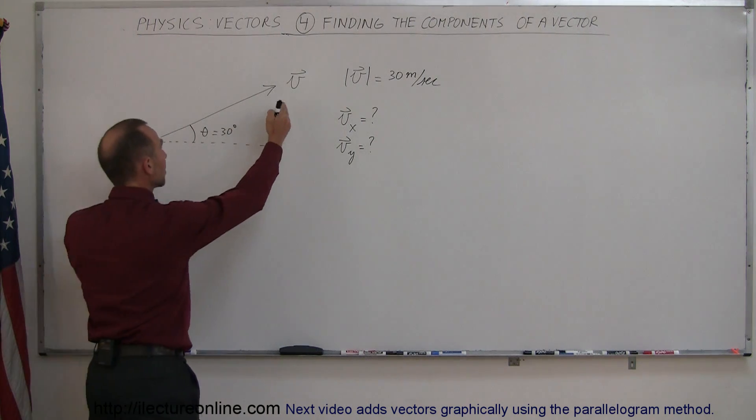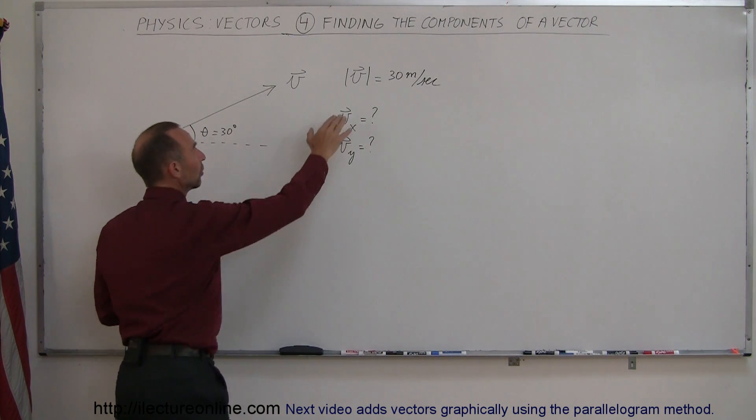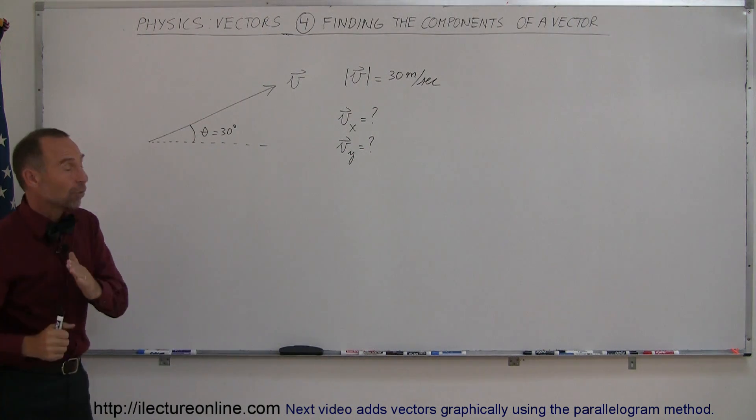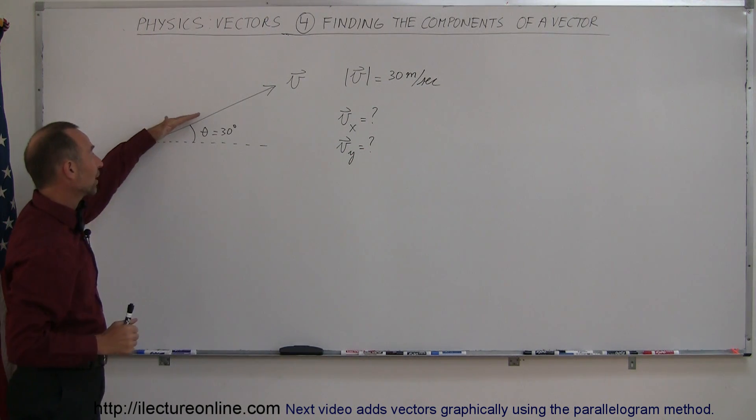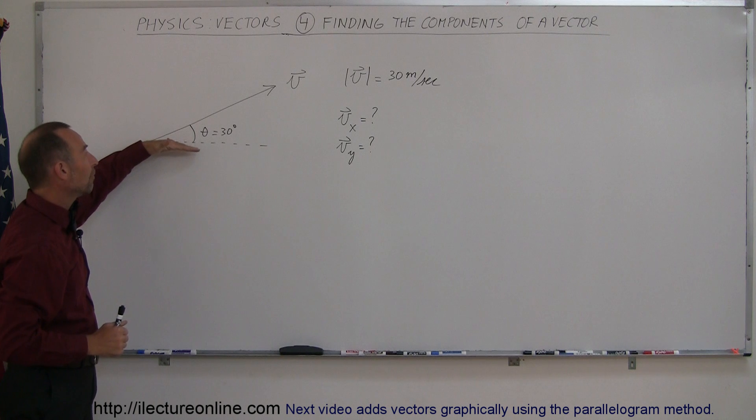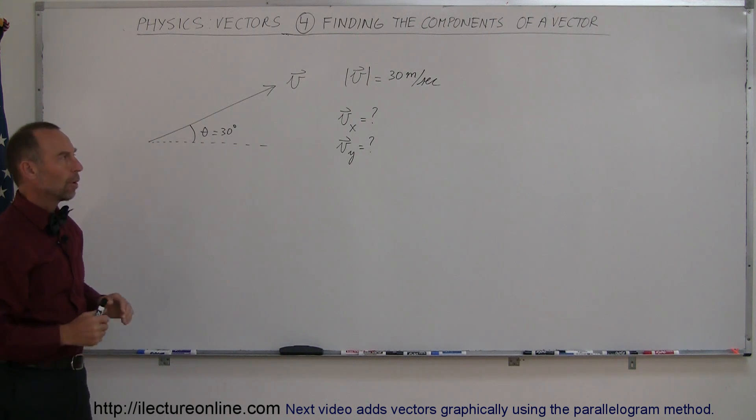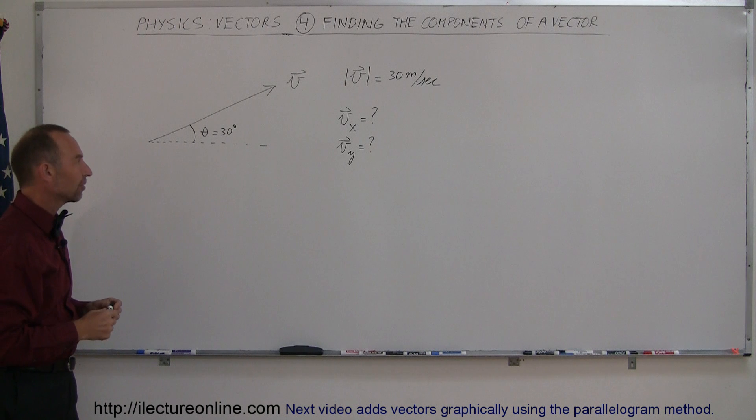Given a vector, let's say here a velocity, the magnitude of the velocity is 30 meters per second and the velocity is directed in a direction that's 30 degrees above the horizontal. So what would be the x and the y component of that velocity?